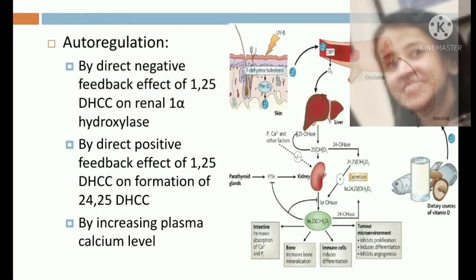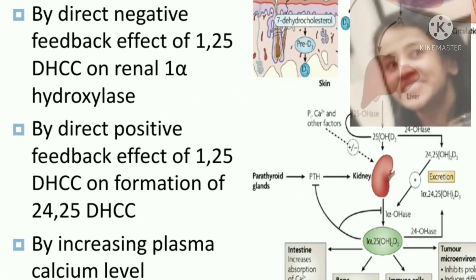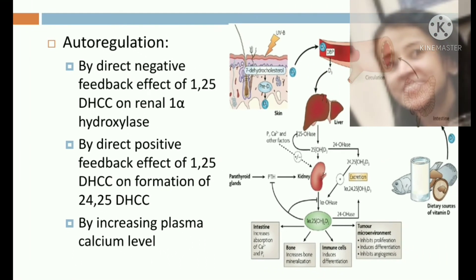Vitamin D itself also regulates its own secretion by a direct negative feedback effect. When vitamin D is synthesized, it inhibits its own synthesis. As you can see here, when 1,25-dihydroxycholecalciferol is produced from 25-hydroxycholecalciferol and its level increases, it in turn decreases its own secretion.